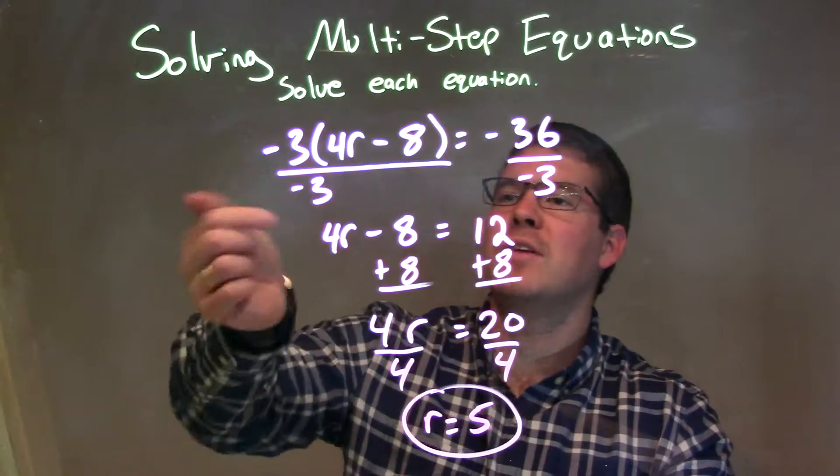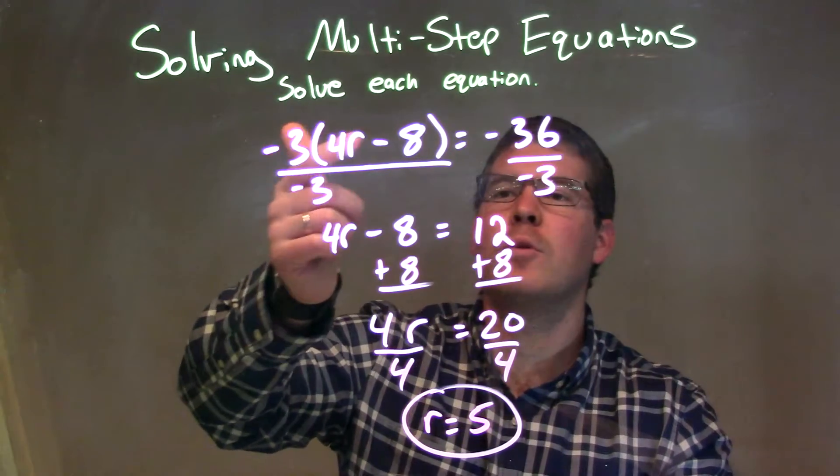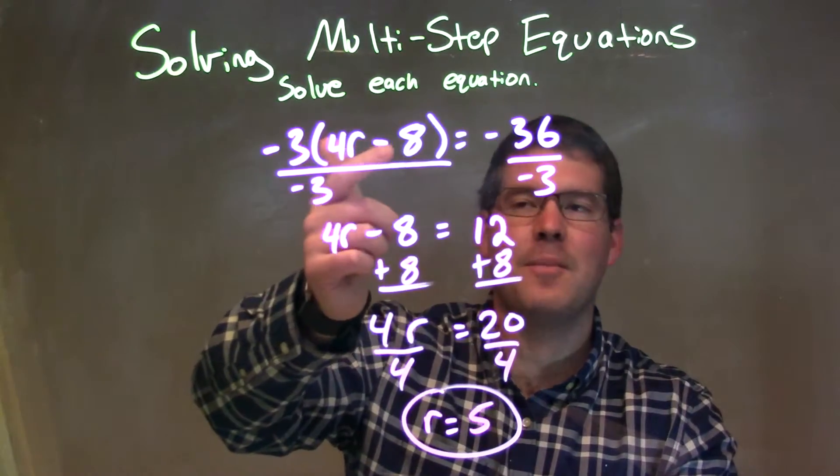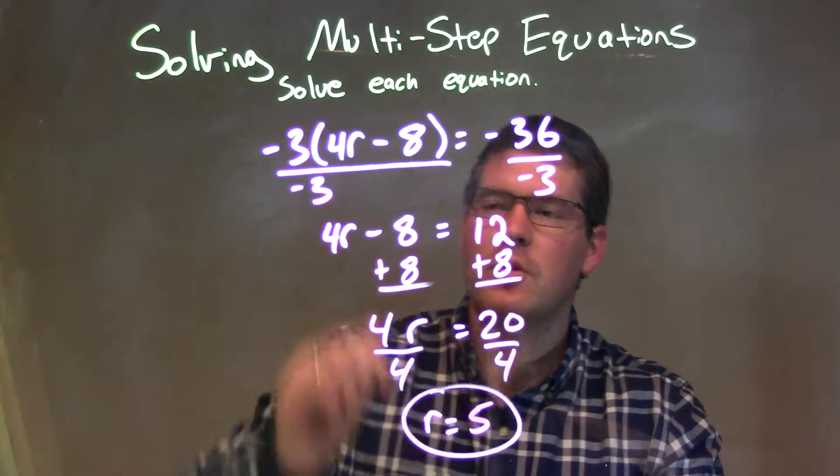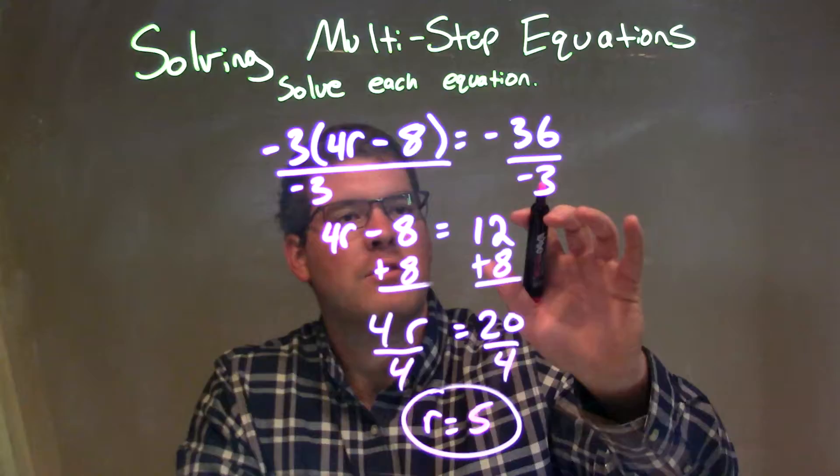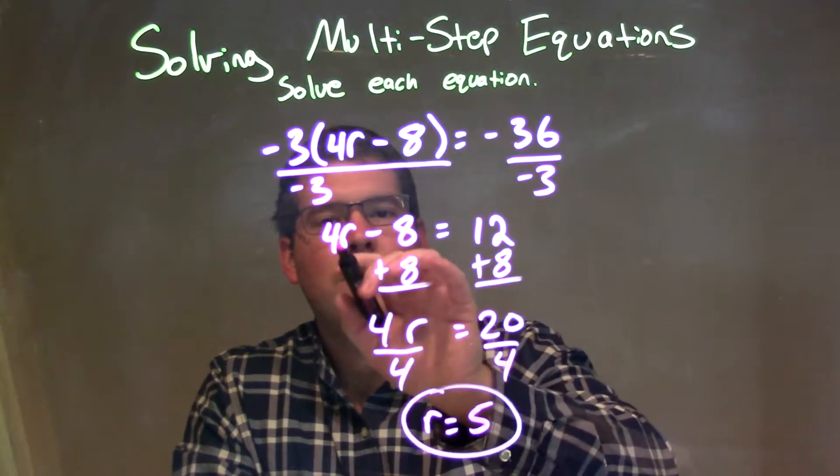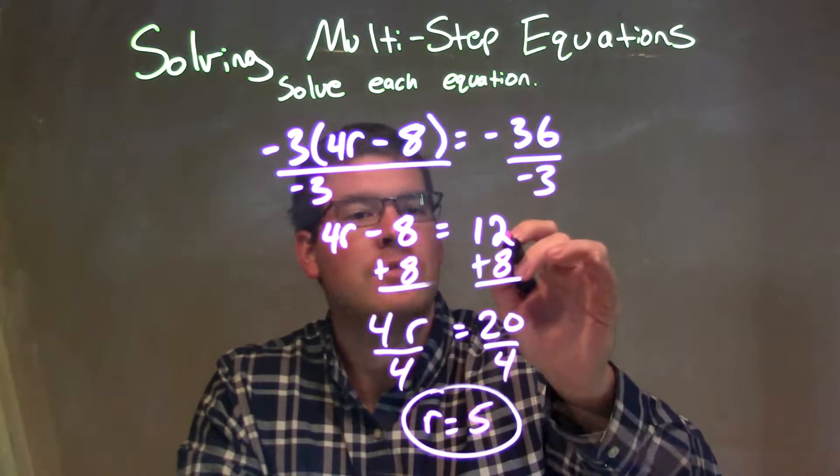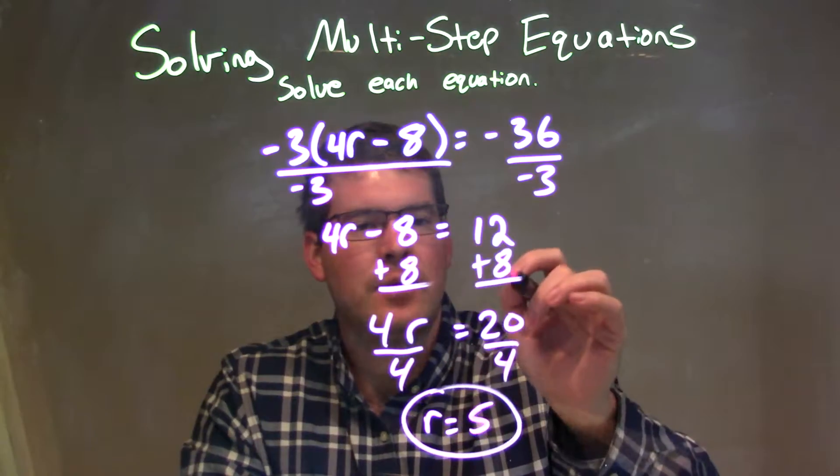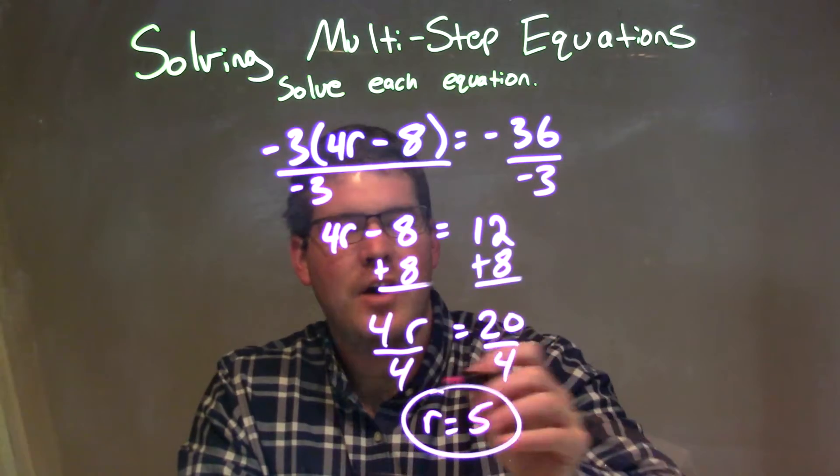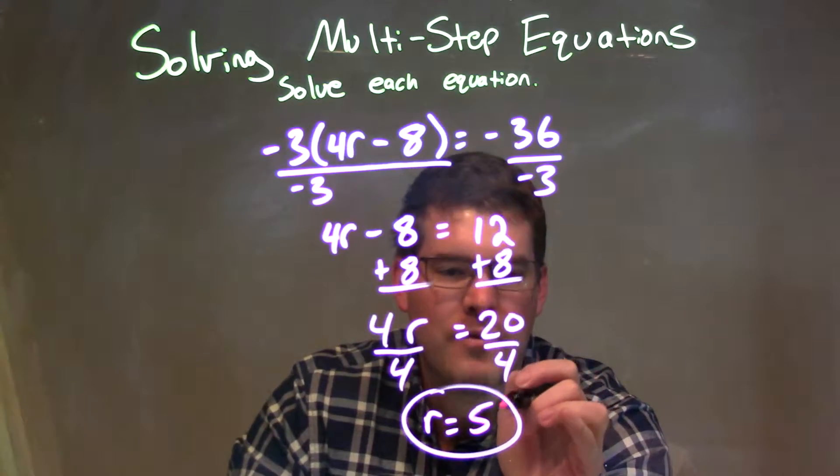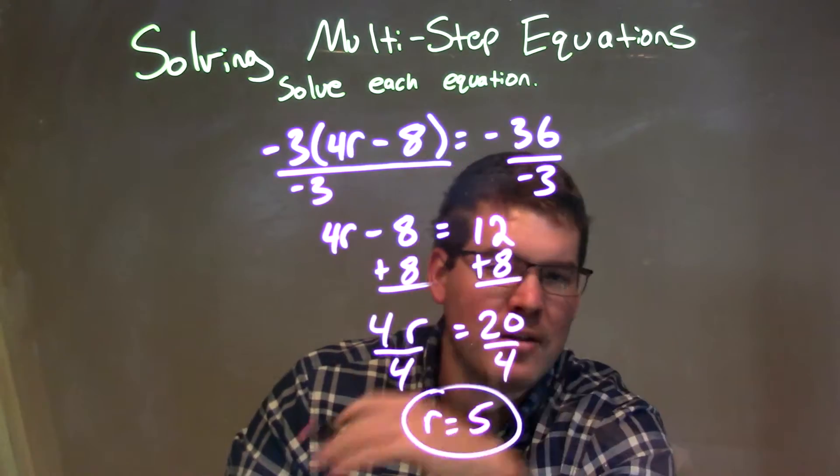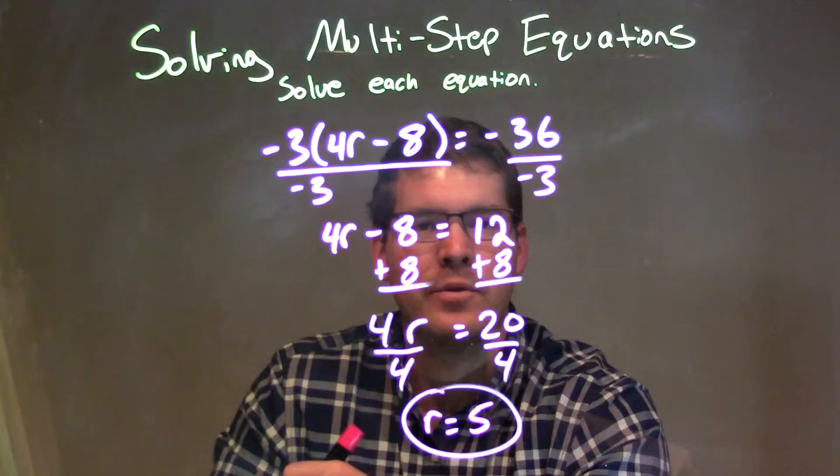So let's recap. We're given negative 3 times parentheses 4r minus 8 in parentheses equals negative 36. Multiplication was going on outside the parentheses, so I divided by negative 3 on both sides. That left me with 4r minus 8 on the left and a positive 12 on the right. I added 8 to both sides, giving me 20 on the right. Then divided by 4 on both sides, giving me r by itself on the left and 20 divided by 4 being 5 on the right. Giving me my final answer here of just r equals 5. Thank you very much.